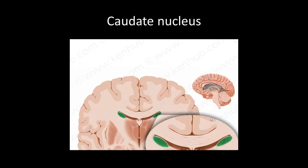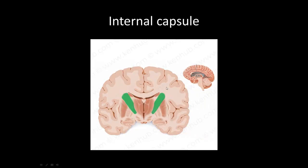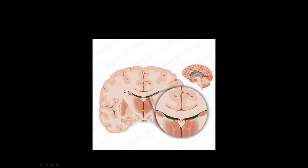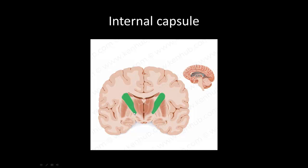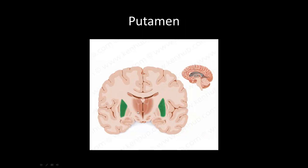Next we have the caudate nucleus, highlighted in green here, and we noted before that the lateral ventricles are medial to the caudate nucleus, as you can see here. Next, we have the internal capsule, another white matter structure — a continuation of the corona radiata, continuing to take information from higher brain centers to lower areas of the brain.